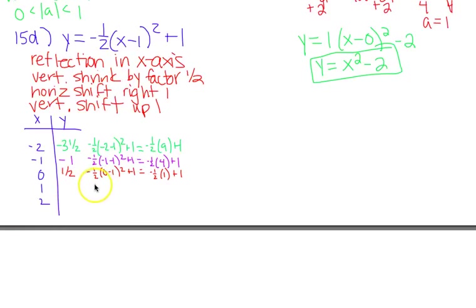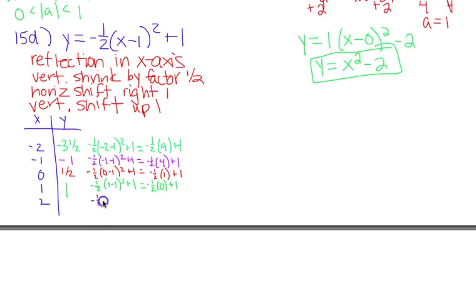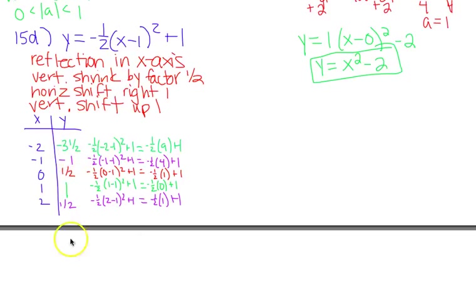For x = 1: −½(1 − 1)² + 1 = −½(0) + 1 = 0 + 1 = 1. For x = 2: −½(2 − 1)² + 1 = −½(1) + 1 = −½ + 1 = ½. You can see the symmetry starting — the values for x = 0 and x = 2 both give ½, and x = −1 and x = 3 should both give −1. So I don't have to compute further points if I recognize the symmetry.